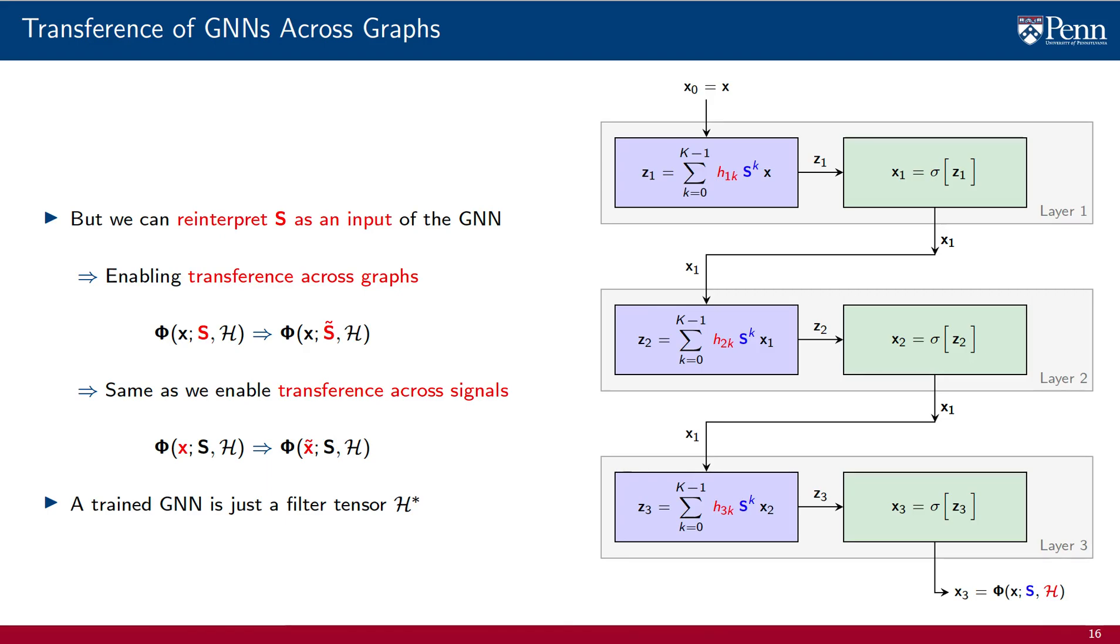In this latter case, we say that the GNN generalizes across different graphs of the family. It is not that the GNN is transferred to something we haven't seen during training, but that the GNN is sufficiently general that it captures the whole variety of graphs we have seen during training. I find the distinction somewhat pedantic. In both cases, we simply interpret the shift operator S as an input. The difference is whether we change it during training or not.